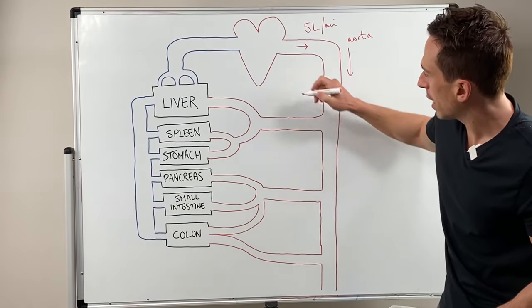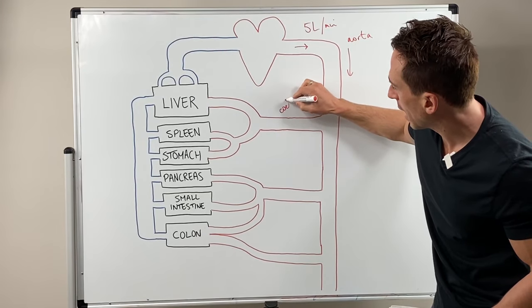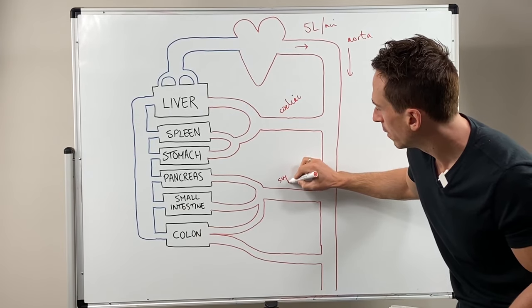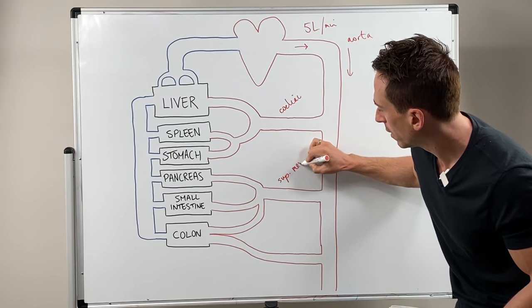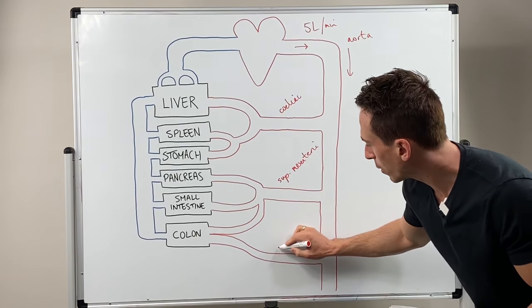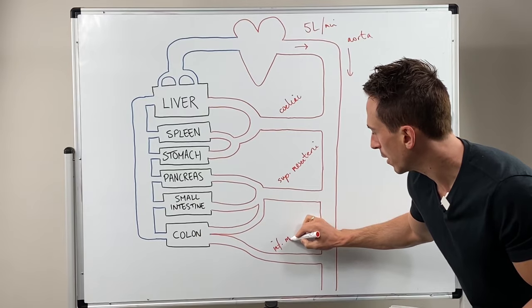Now the first one we want to look at is that of the celiac artery. The next is the superior mesenteric and then the last one we want to look at is the inferior mesenteric.